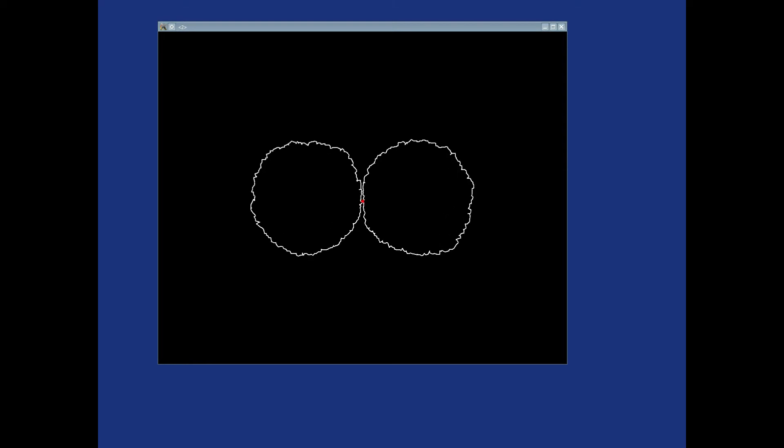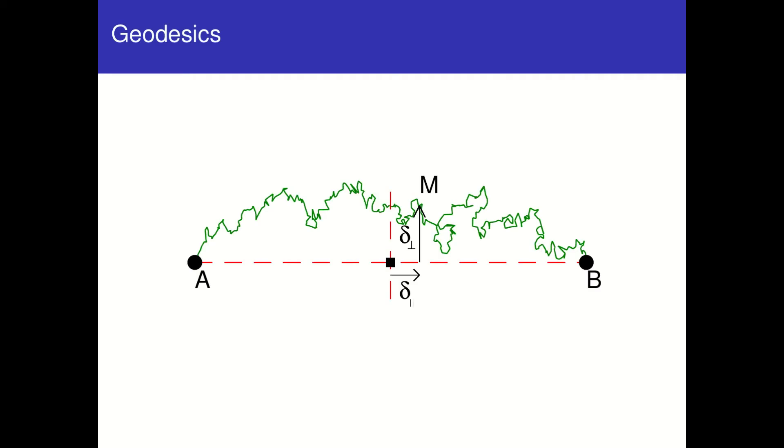The deviation from the straight line depends with the Euclidean distance between the points as a power law, with exponent two-thirds. We have also found the meaning of that exponent within the KPZ framework.